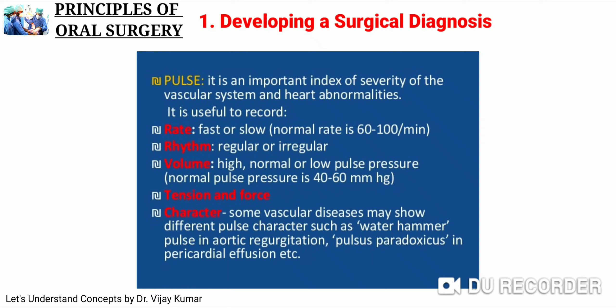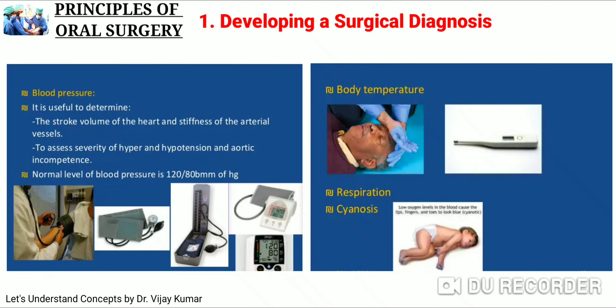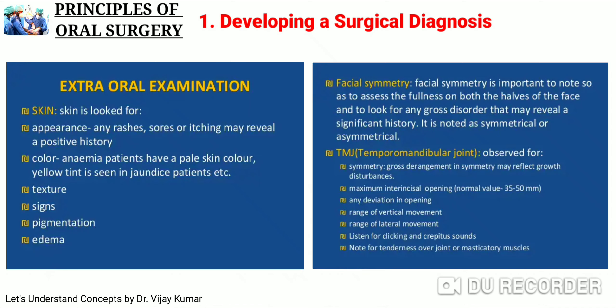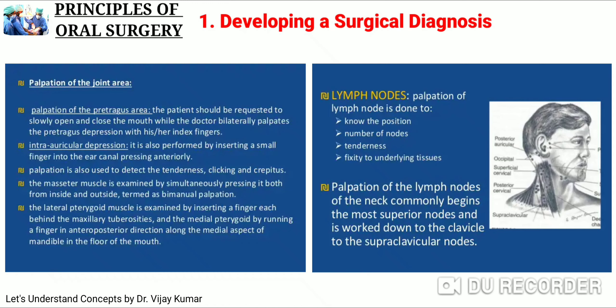We check blood pressure, body temperature, respiratory rate, cyanosis, clubbing, icterus, and jaundice. In extraoral examination, we check skin appearance, color, texture, signs, pigmentation, and edema. We check facial asymmetry, and the temporomandibular joint for derangement, symmetry, entrance, mouth opening, deviations, vertical movement, range of lateral movements, clicking, and crepitus sounds. We check tenderness over masticatory muscles and palpate the joint area, pretragus area, intra-auricular depression, and lymph nodes.